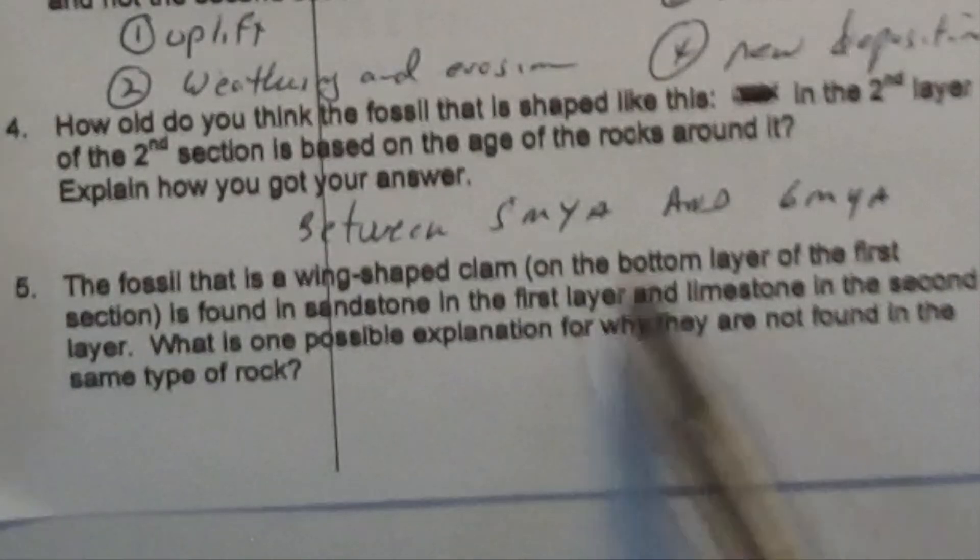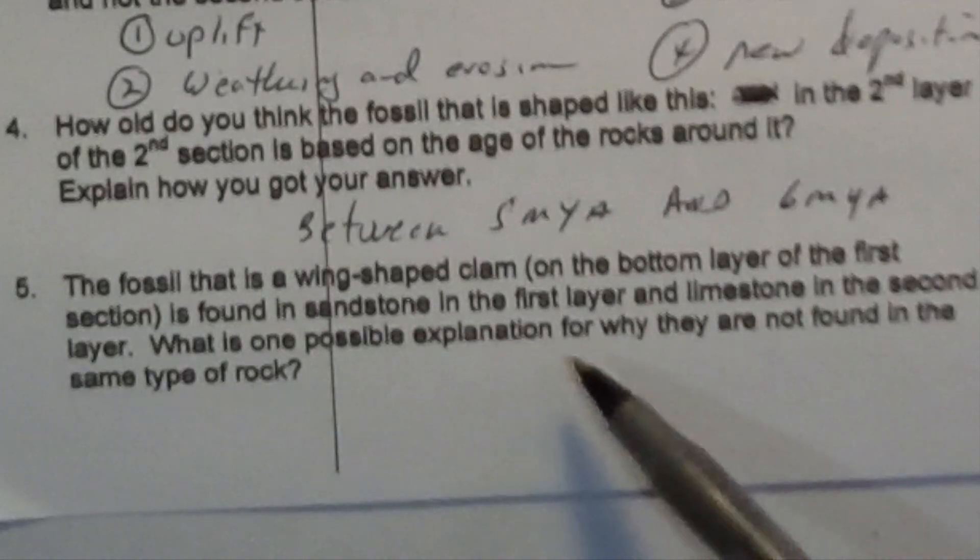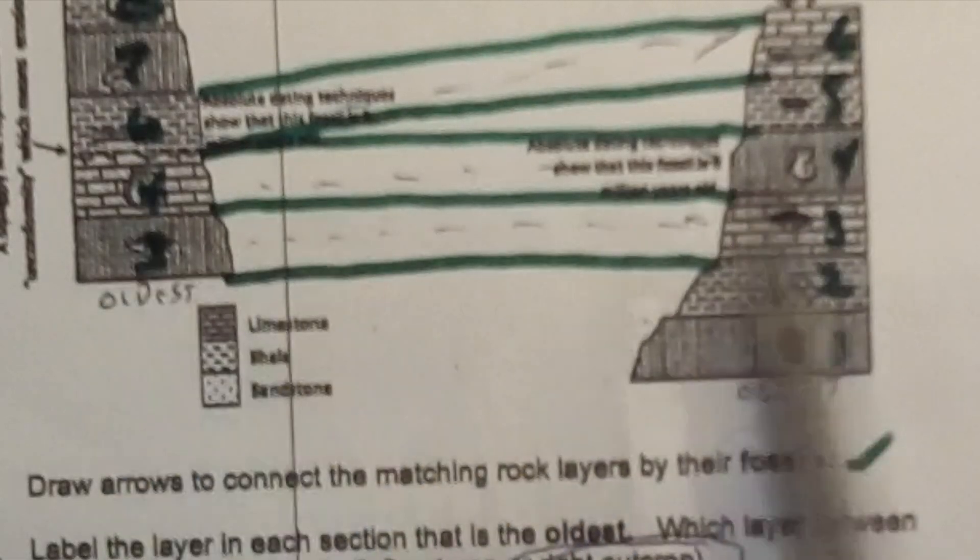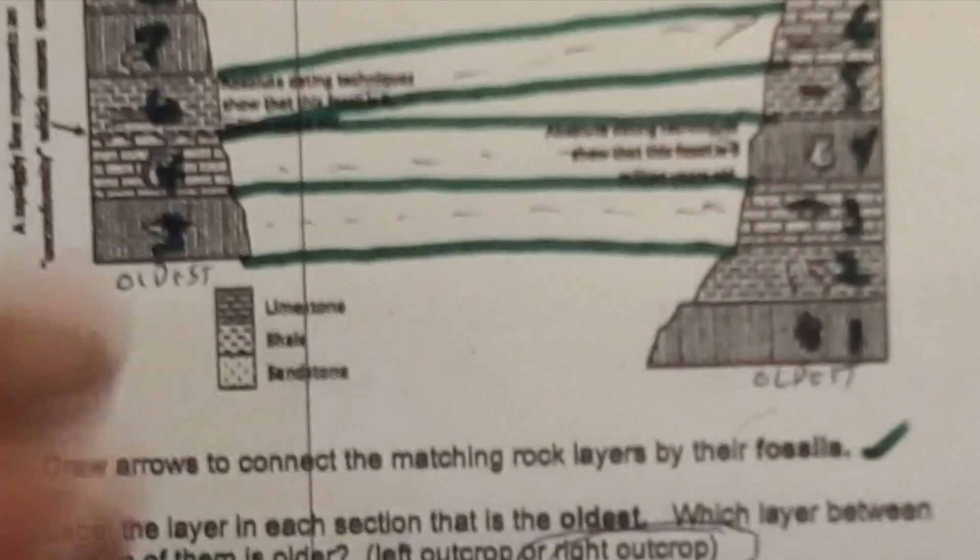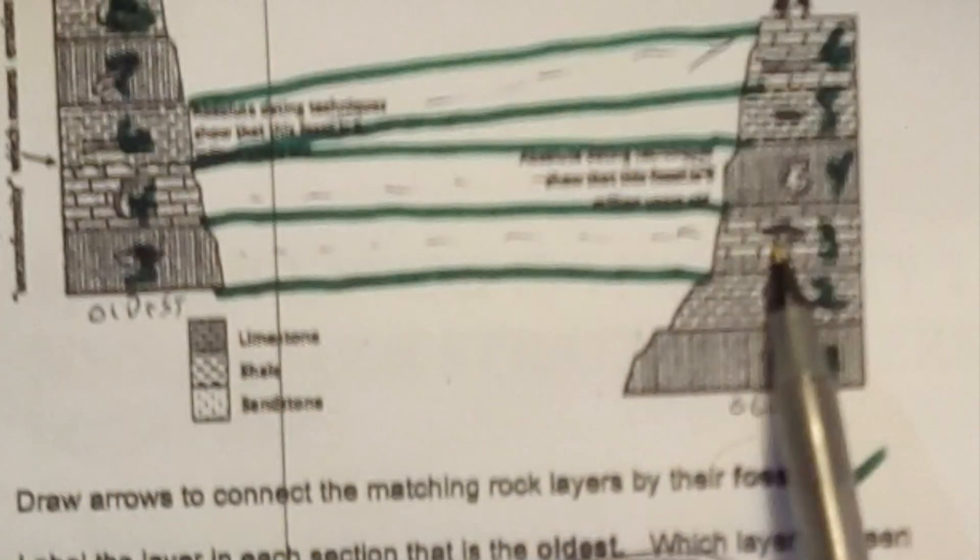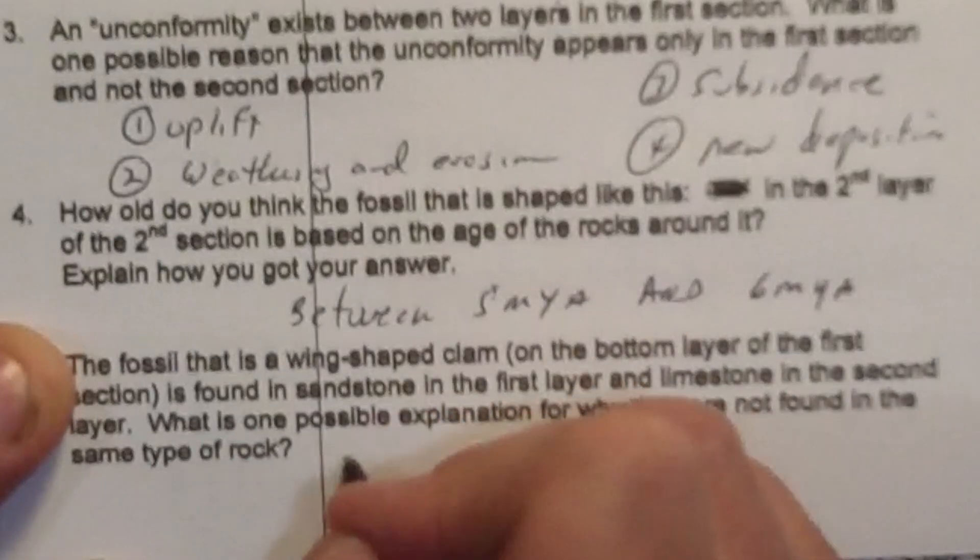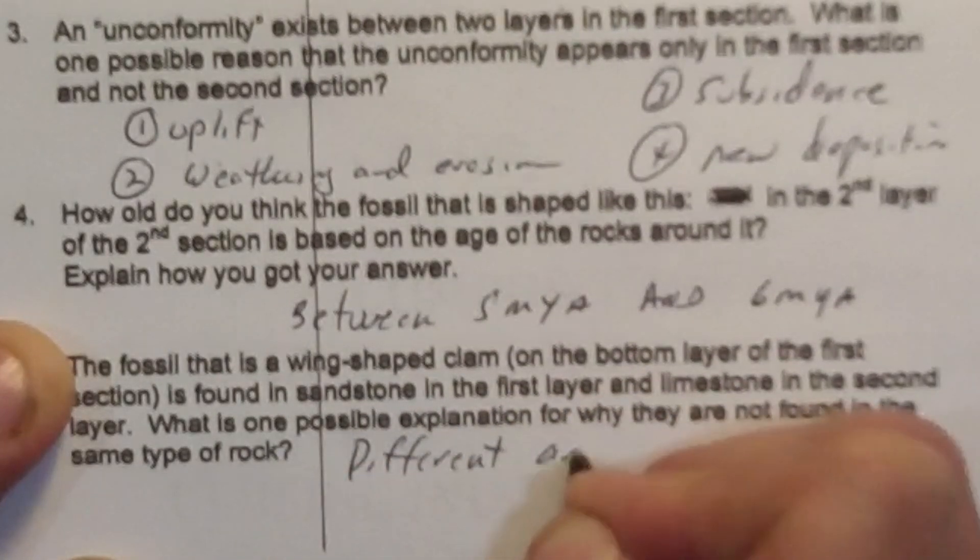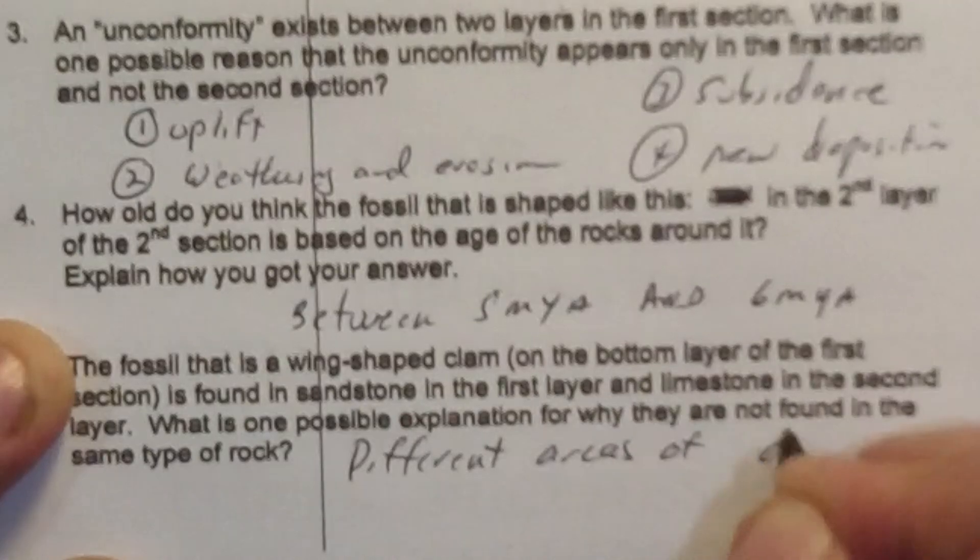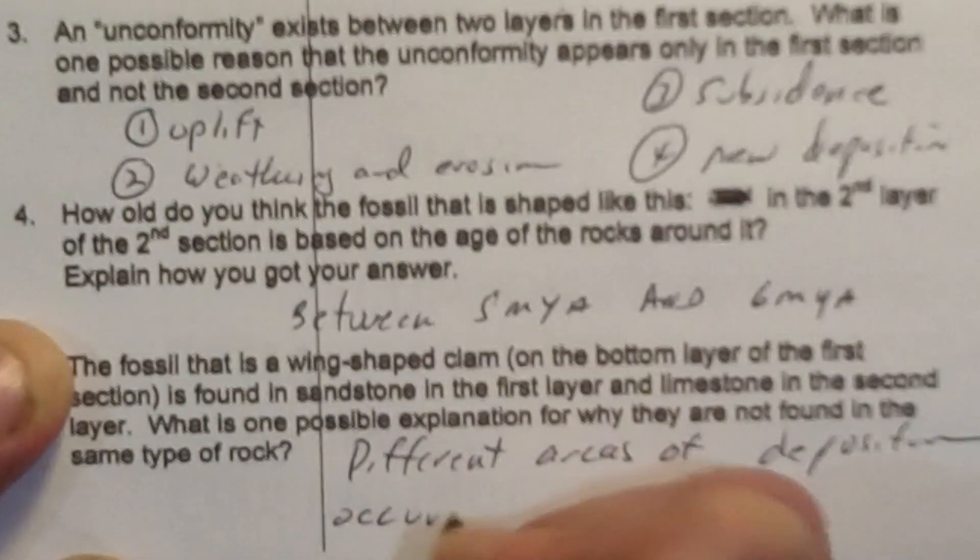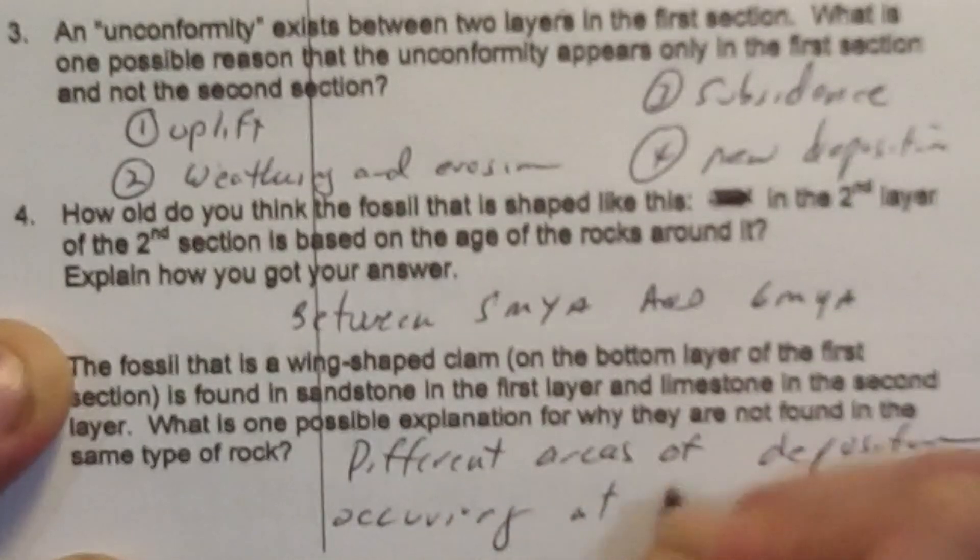The fossil, then, is a wing-shaped clam. It's found in sandstone in the first layer, and then it's found in limestone over here. What would be a possible explanation for that is that in this region we had sand being deposited, and in this region we had limestone being formed. So we had different areas of deposition occurring at the same time.